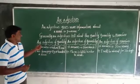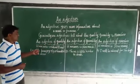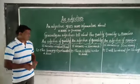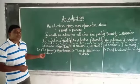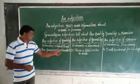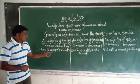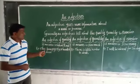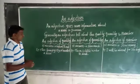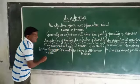Let us see an adjective of quality. It answers 'what kind'. For example, the hungry tiger hunted a deer. Here, the word 'hungry' answers the question 'what type'. So, hungry is an adjective.